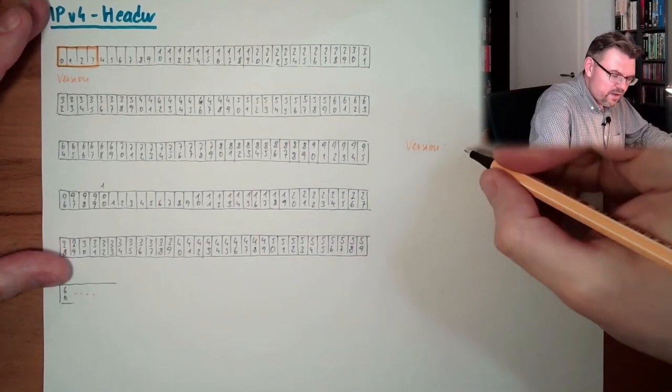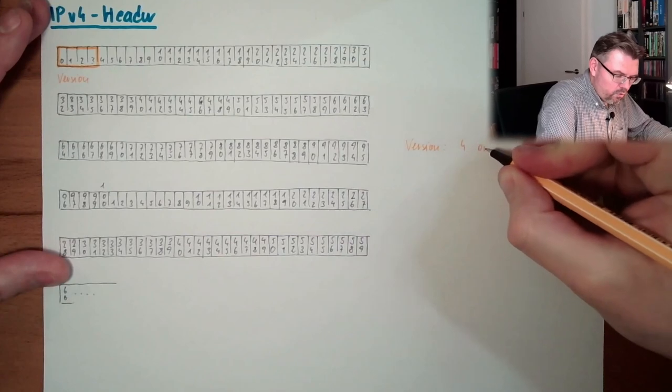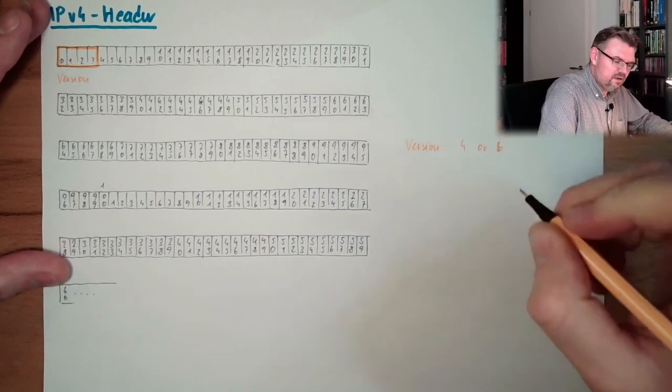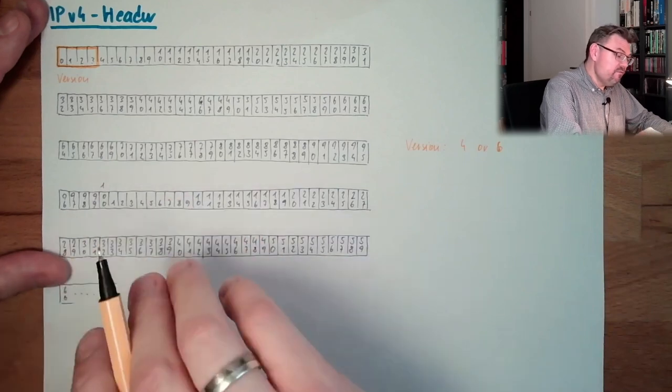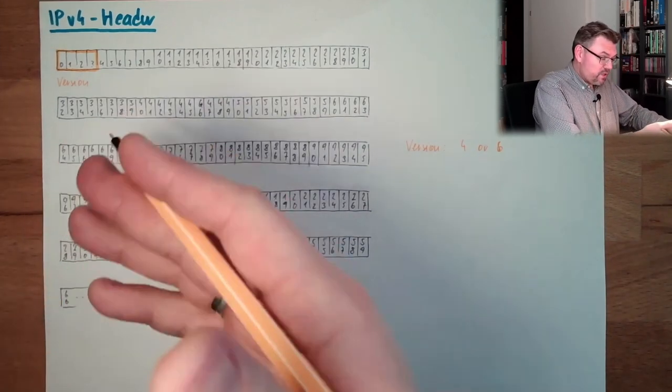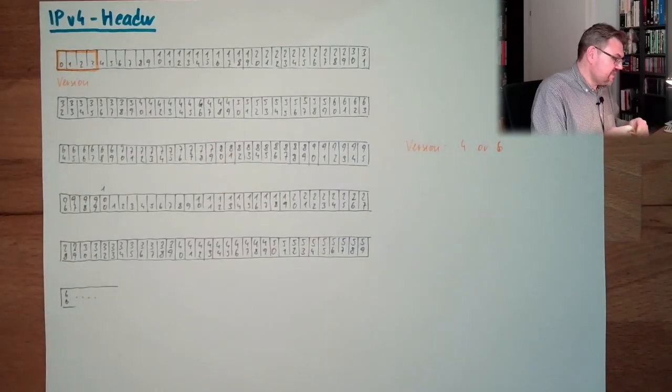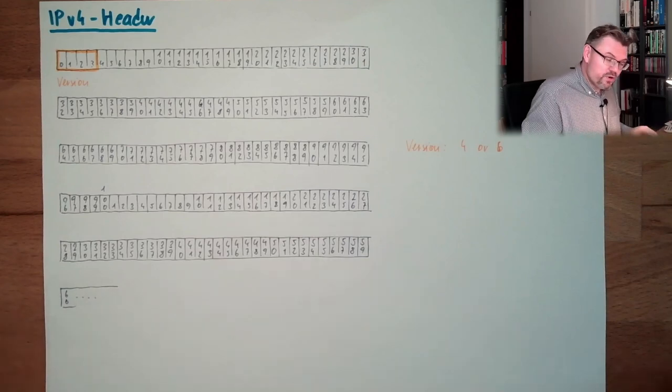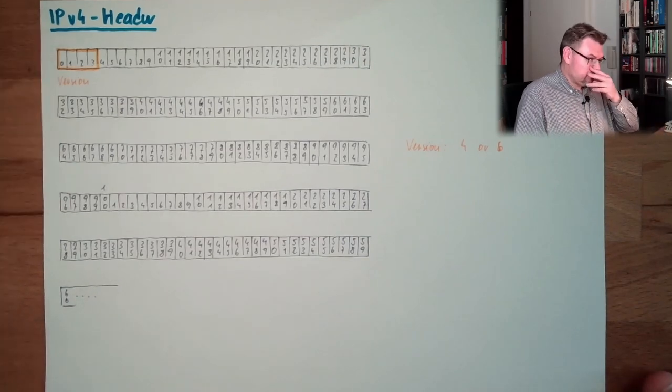Currently there is only 4 or 6, IPv4 or IPv6 version 6. This starts pretty much with this IPv6 header. We will talk about this. Looks pretty much the same. At least the start is the same.